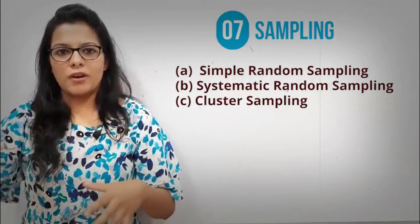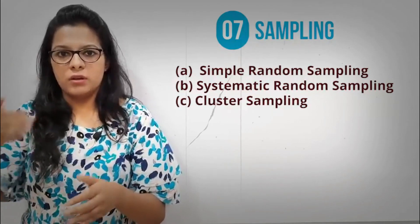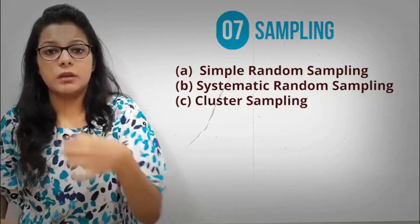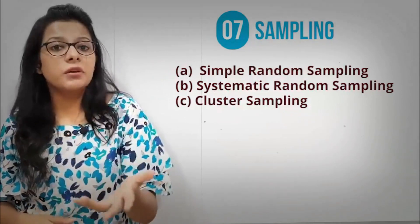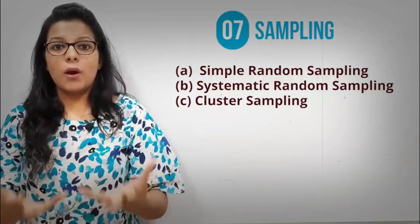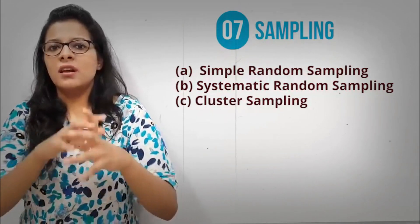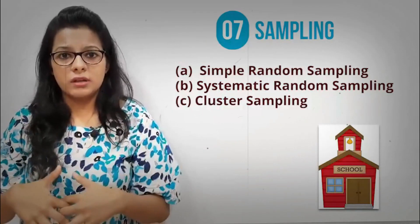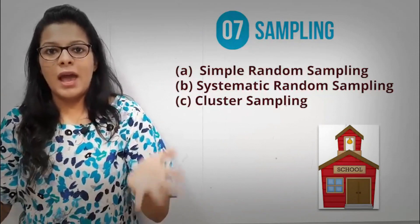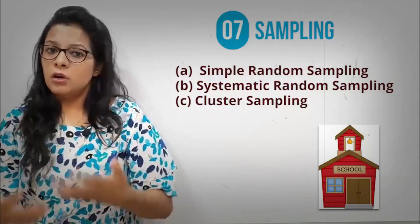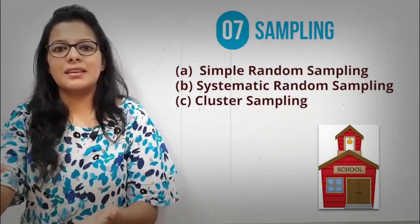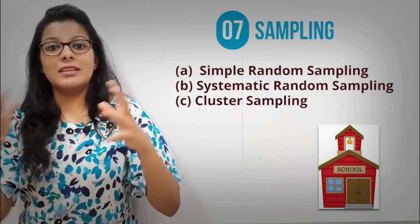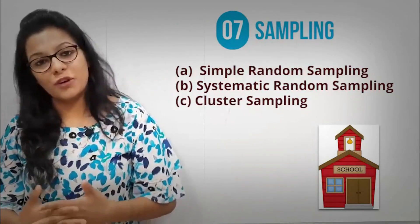Another better way is systematic random sampling — you arrange students in a row and pick every 10th student: 10th, 20th, 30th, 40th, and so on. Another type is cluster sampling — rather than choosing individual students, you choose some naturally existing clusters, for example 10 schools, research those 10 schools, and then generalize the findings to the entire population. So these are a few important ways to take a sample for your research.